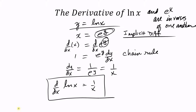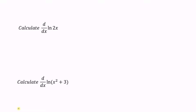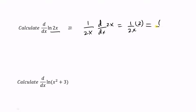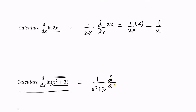Let's calculate a couple of derivatives of logarithmic functions. First, d/dx of ln of 2x: using the formula this is 1 over 2x, but since 2x is not plain x we multiply by d/dx of 2x, which is 2, giving 1 over 2x times 2 equals 1 over x. Second, d/dx of ln of x squared plus 3: this is 1 over x squared plus 3, times d/dx of x squared plus 3, which is 2x. So the answer is 2x over x squared plus 3.